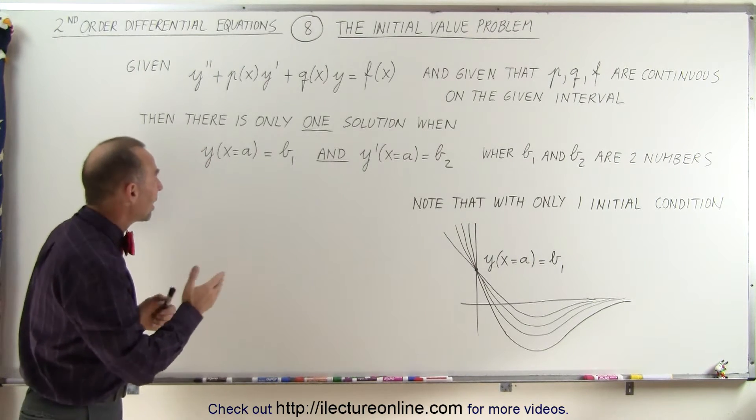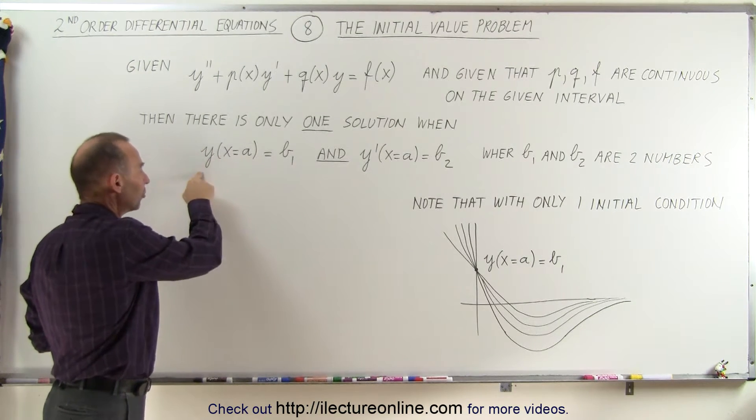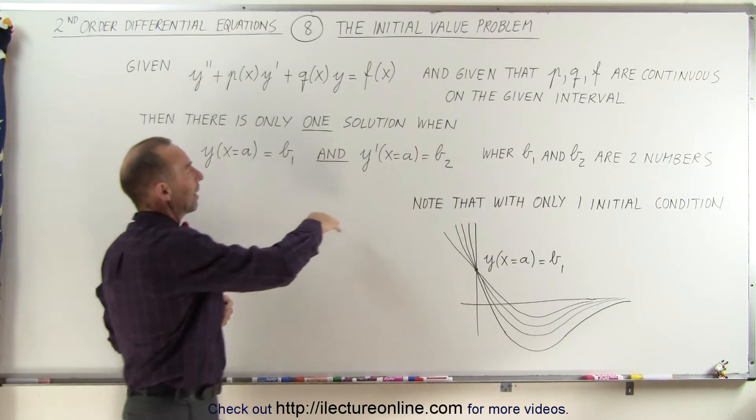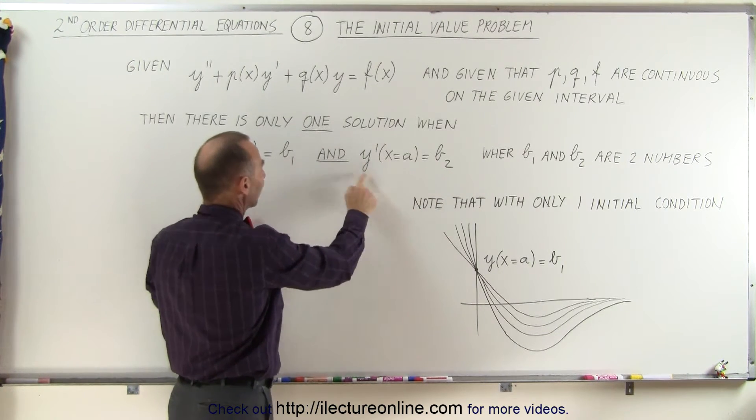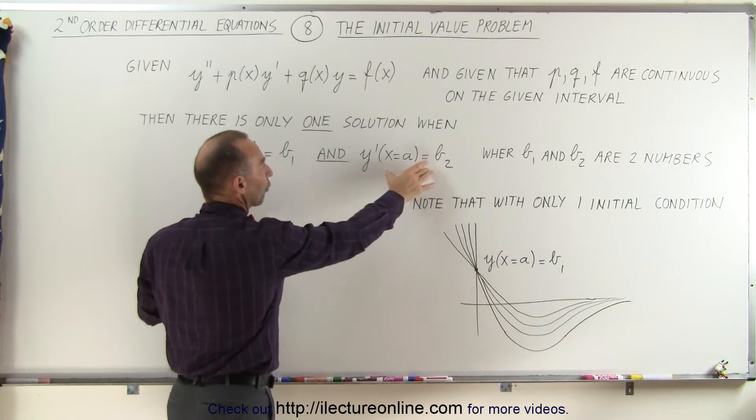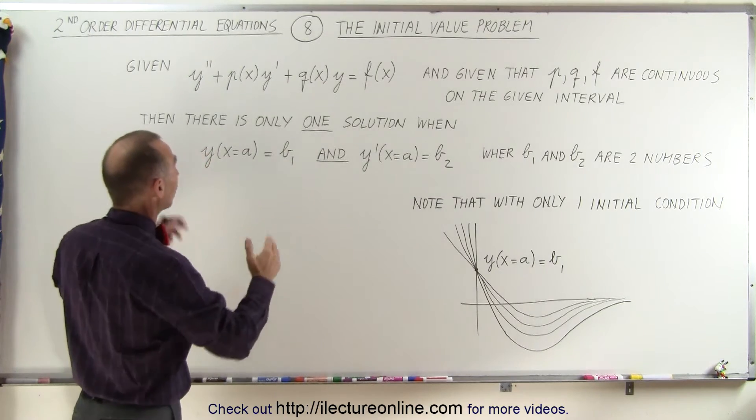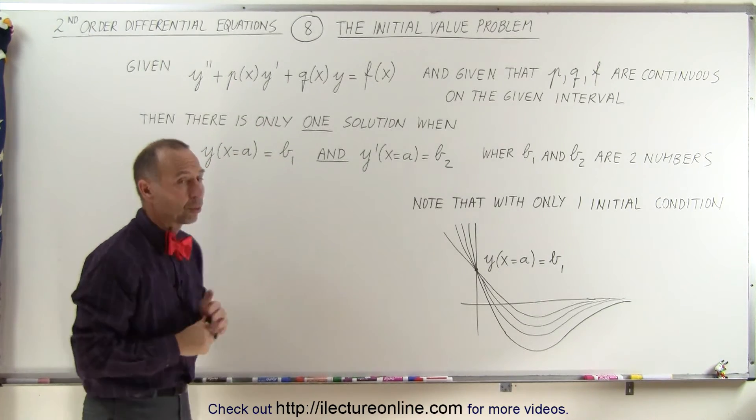Now what that means is that we have an initial value x equals a for the function, and then we have initial value x equals a for the first derivative of the function. In each case, we have a specific value for that function or for the derivative of that function. And if that's the case, then there's only one solution to this differential equation.